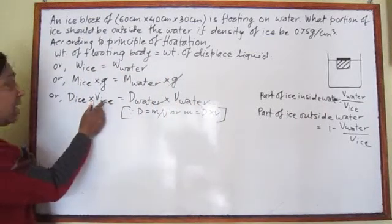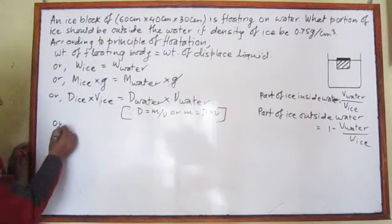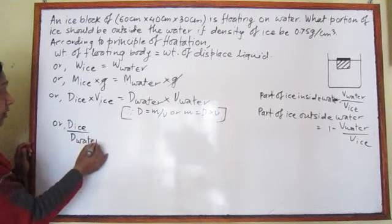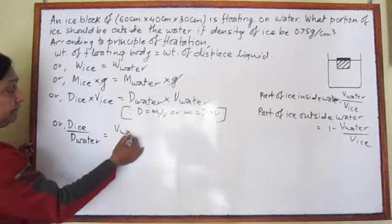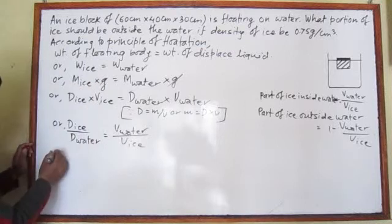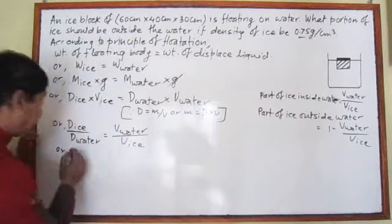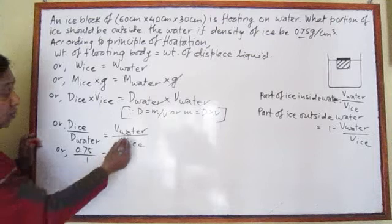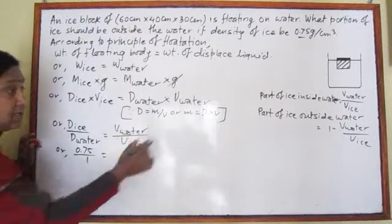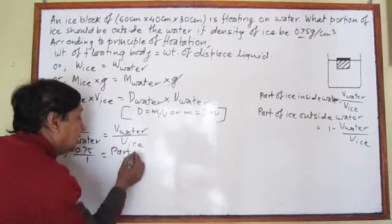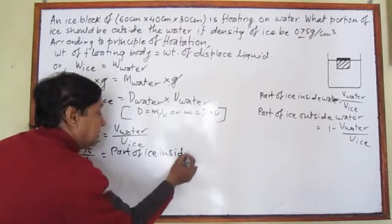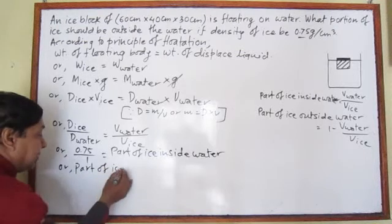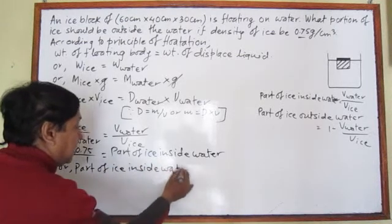Our target is to find the ratio ρ_water to ρ_ice. Since ρ_water is on the right-hand side and ρ_ice is on the left, we rearrange to get: ρ_water divided by ρ_ice equals volume of displaced water divided by volume of ice. Density of ice is given as 0.75 and density of water is 1. This ratio also equals the part of ice inside water.